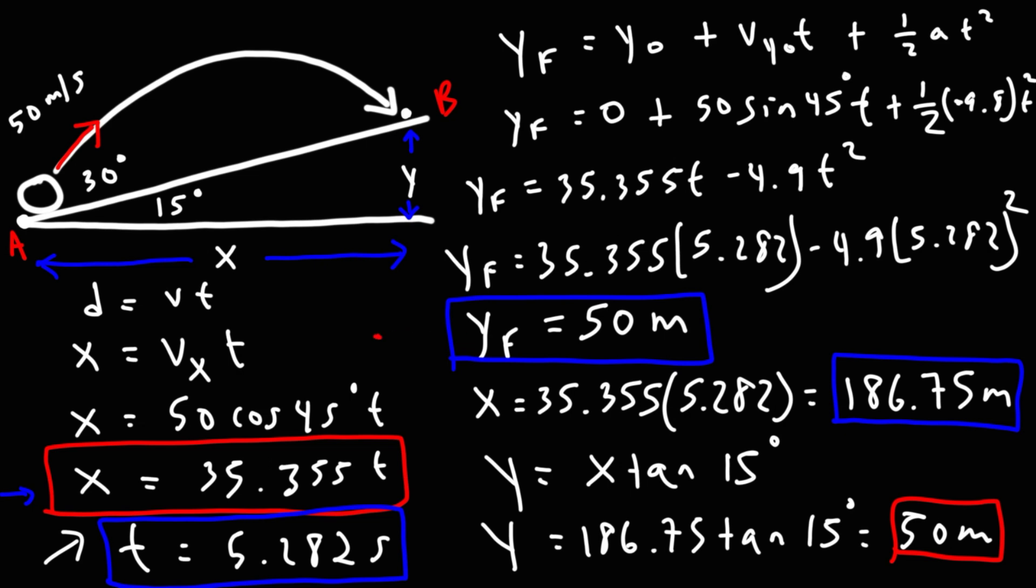So we know that the projectile landed 50 meters above where it started with a range of 186.75 meters. So that's basically it for this video. So now you know how to solve a typical projectile motion problem on an incline.